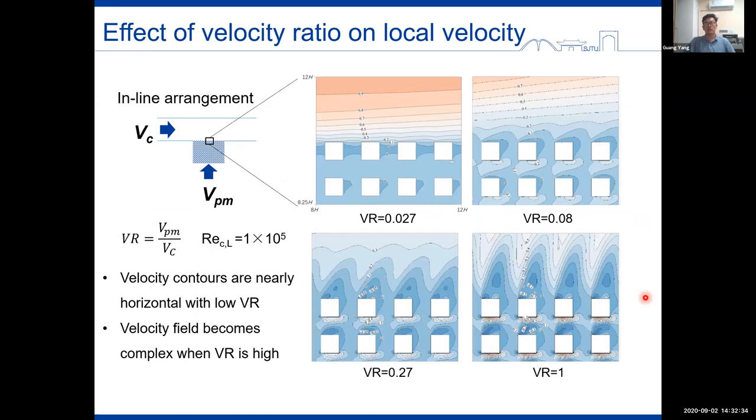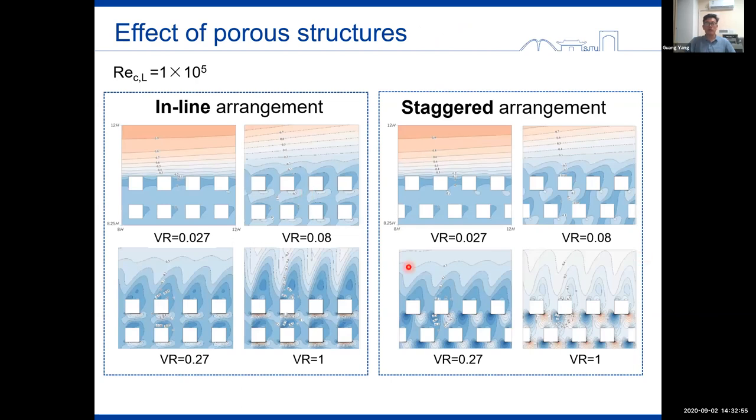Here this slide shows the effect of velocity ratio on local velocity distribution at the interface. So the velocity contours are nearly horizontal when the velocity ratio is low. But for high velocity ratios, the velocity field becomes much complex. The flow patterns are similar for the two different arrangements of pore structures when the velocity ratio is low, as can be seen from the first row of this figure. But they are quite different when the velocity ratio is high. As in this case, the porous media flow dominates the whole flow field.